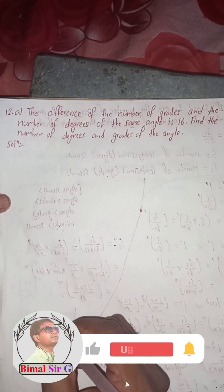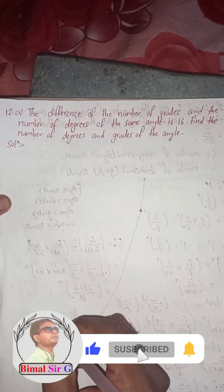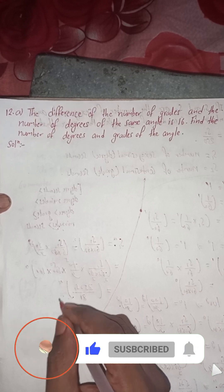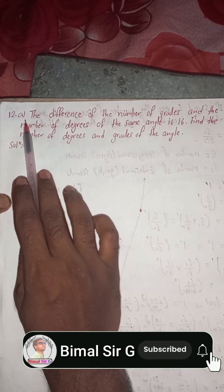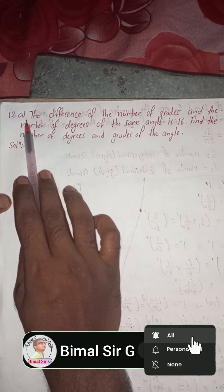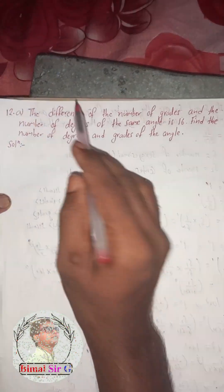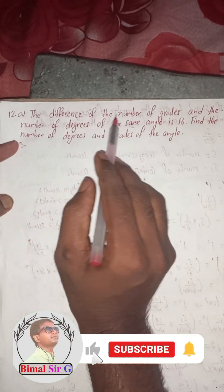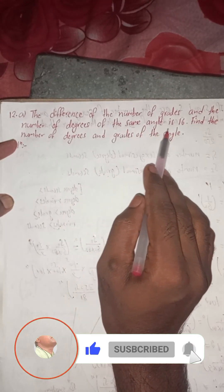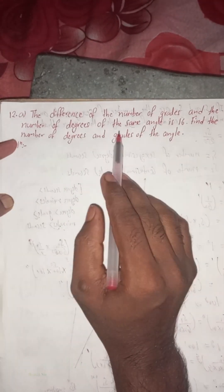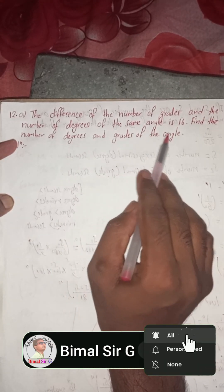Hi everybody. Welcome back to Vimal Sarji YouTube channel. Now I am going to solve 12A. This is from class 9 Vedanta OPT Maths. The difference of the number of grades and the number of degrees of the same angle is 16. Find the number of degrees and grades of the angle.